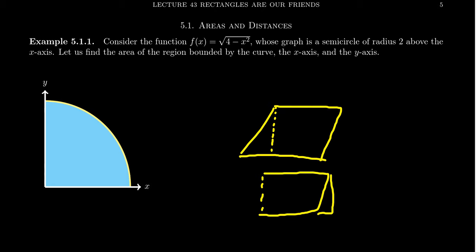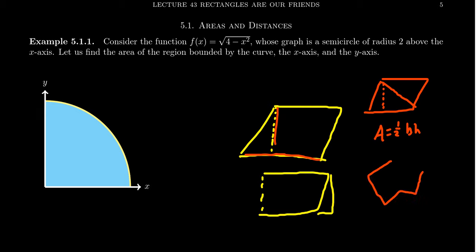You can basically cut off a triangle and move it to the other side to make a rectangle, so the area of a parallelogram is base times height. Every triangle is half of a parallelogram, giving the classic formula one-half base times height. For any polygon, we can dissect it into triangles, calculate the area of each, and sum them up.